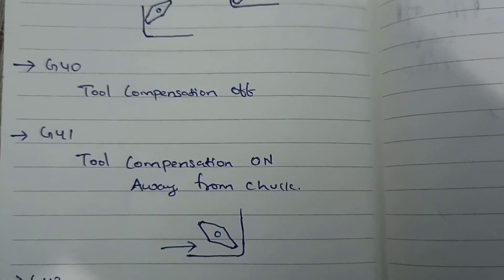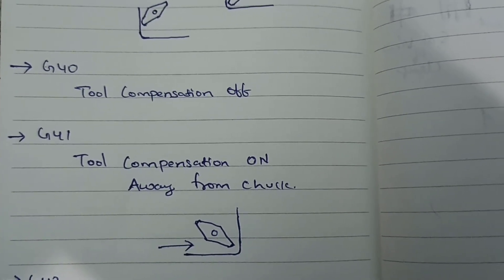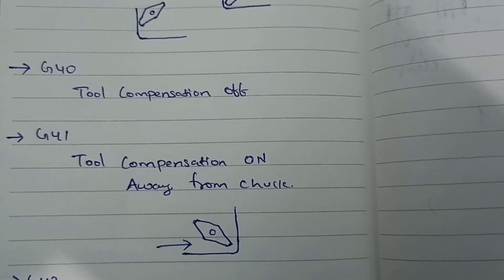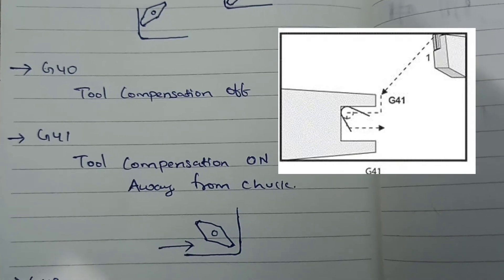G41 code will be used to enable the tool compensation while the tool is moving away from chuck on OD turning. For ID turning, the G41 will be used when the tool is moving towards the chuck.